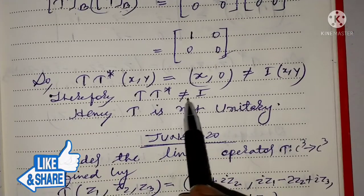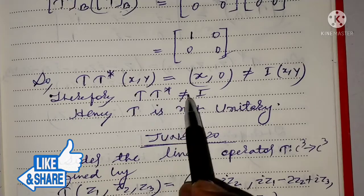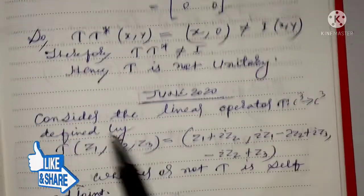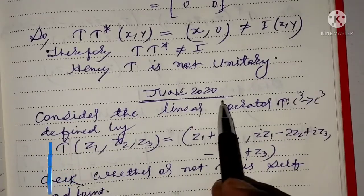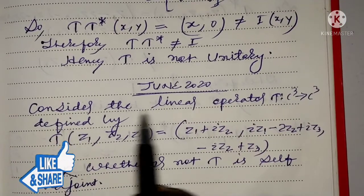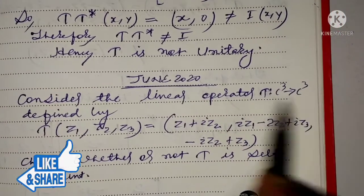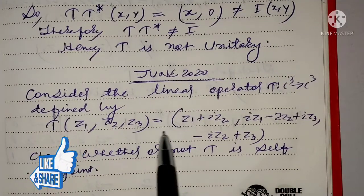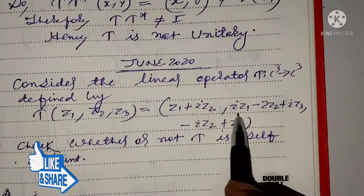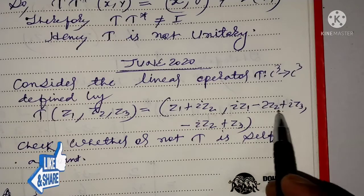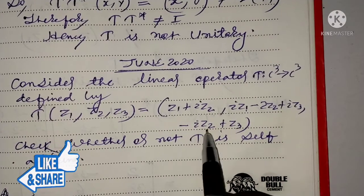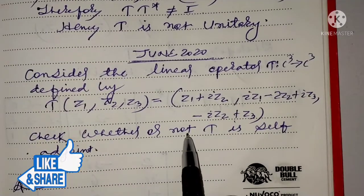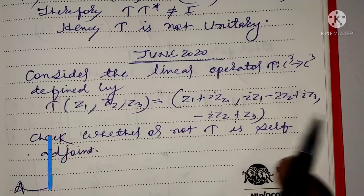For T to be unitary, we need T·t* and t*·T both equal to I. Next, from June 2020 exam: consider the linear operator T from C³ to C³ defined by T of (z1, z2, z3) equal to (z1 + iz2, iz1 - 2z2 + iz3, -iz2 + z3). Check whether T is self-adjoint.